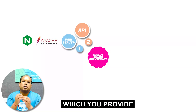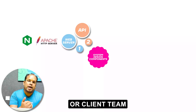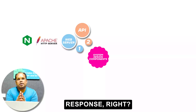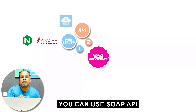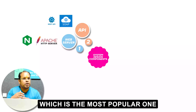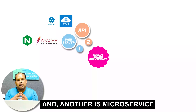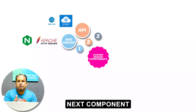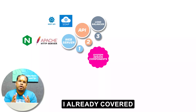Number two is the API. An API is something you provide to your front-end team or client team, which returns a JSON response. You can use a SOAP API, which is XML-based, or a REST API, which is the most popular one that everybody is using. Another option is microservices as well.